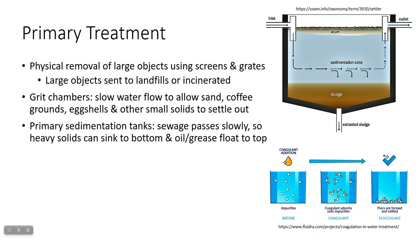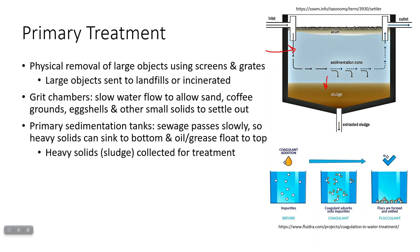Then you move to primary sedimentation tanks. Wastewater moves very slowly so that heavy solids can come out of solution — the solids sink to the bottom and that's called sludge. The sludge is usually scraped off the bottom of the tank and sent elsewhere for treatment. Anything greasy or fatty that doesn't mix with water is going to float to the top and form a scum layer, which is removed by skimmers that skim across the surface.